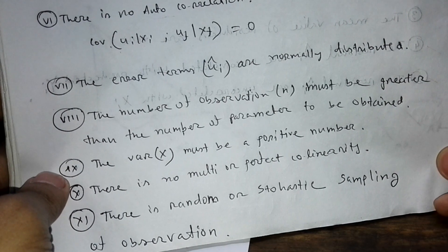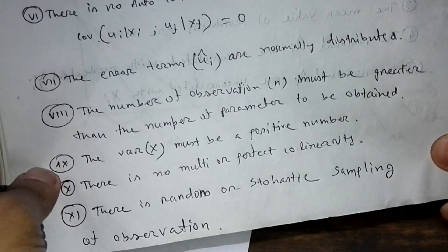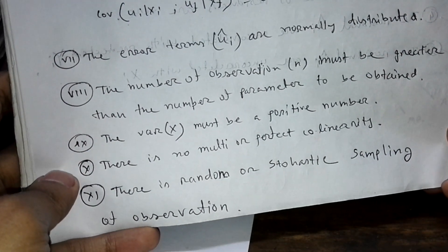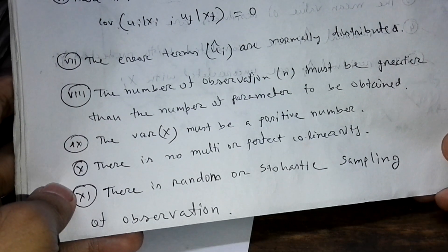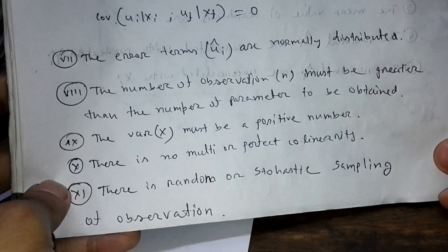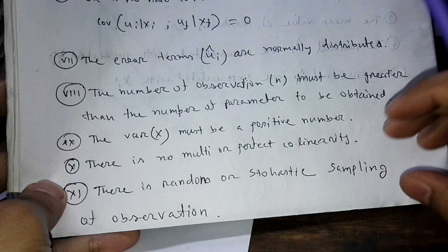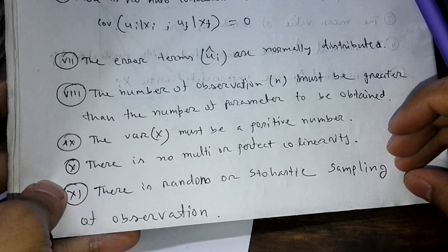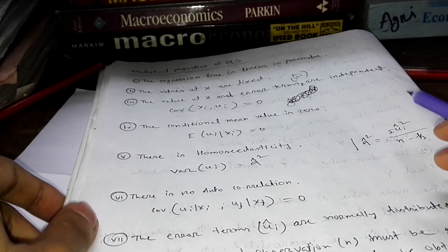Property nine says the variance of X — the independent variable — must be a positive number. Property ten says there is no multicollinearity or perfect collinearity. Property eleven says there is random or stochastic sampling of observations — the observations taken for analysis must be random. That covers all eleven statistical properties of OLS.